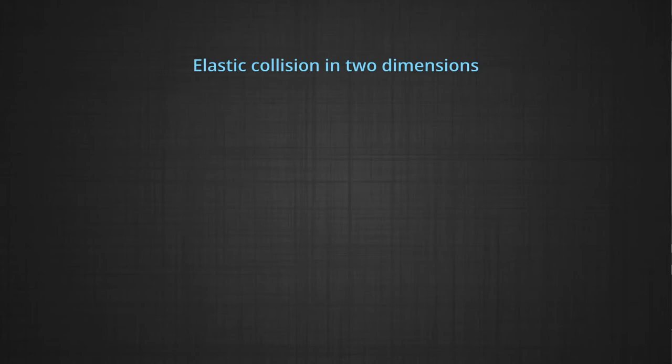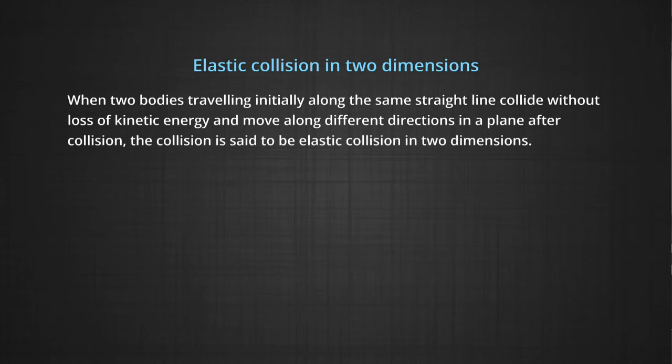For solving the problems based on elastic collision in two dimensions, first we shall revise it in brief. What is elastic collision in two dimensions? When two bodies travelling initially along the same straight line collide without loss of kinetic energy and move along different directions in a plane after collision, the collision is said to be elastic collision in two dimensions.